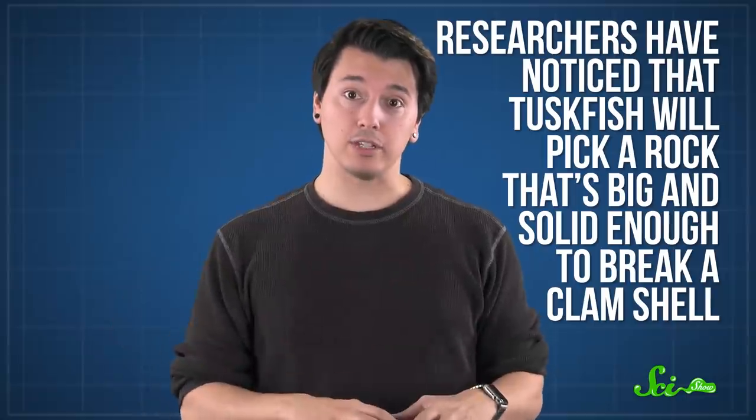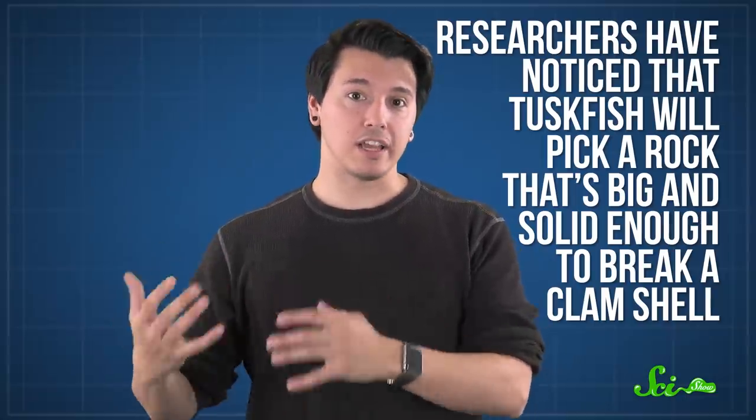While there's no one definition of tool use in animals, scientists generally agree that it has something to do with holding or manipulating an object to alter the environment or attain a goal. And researchers have noticed that tuskfish will pick a rock that's big and solid enough to break a clam shell, and they'll use a favorite rock again and again.